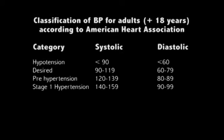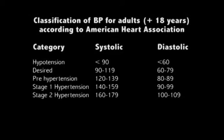In hypertension stage one, the systolic pressure runs between 140 to 159 and diastolic pressure between 90 and 99. In stage two hypertension, systolic pressure runs between 160 to 179 and diastolic pressure between 100 to 109. Beyond that, systolic pressure is greater than or equal to 180 and diastolic pressure greater than or equal to 110.